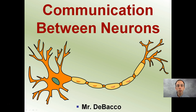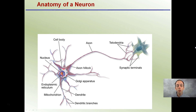Here we're going to look at the communication between neurons. Because your body has so many neurons that are all interconnected, it's very important that they are able to communicate and relay signals from one to the other. First off, we have to understand the basic anatomy of a neuron.